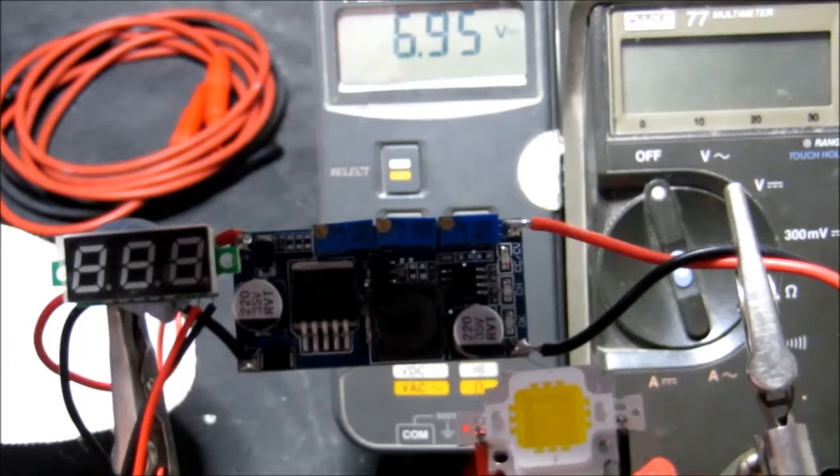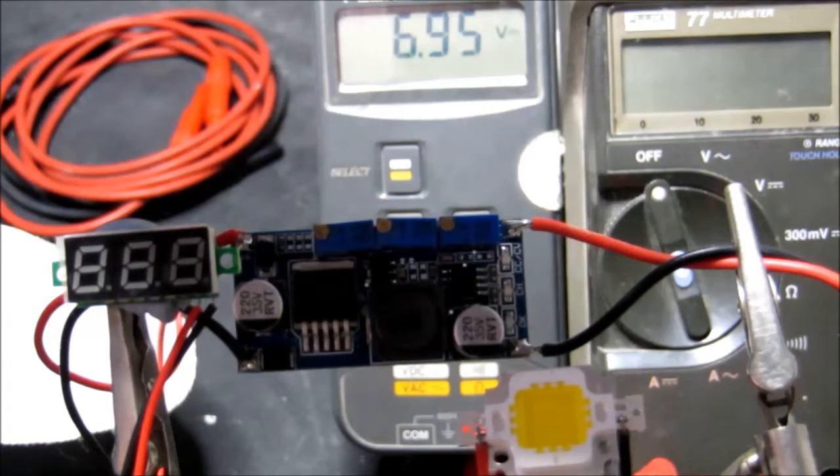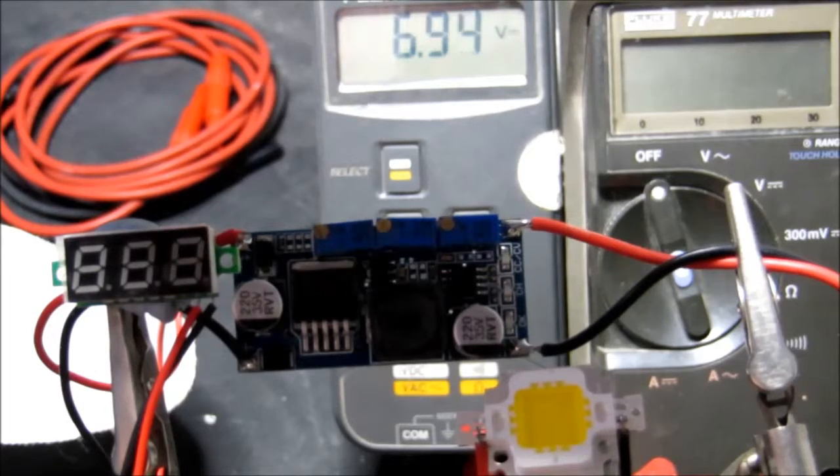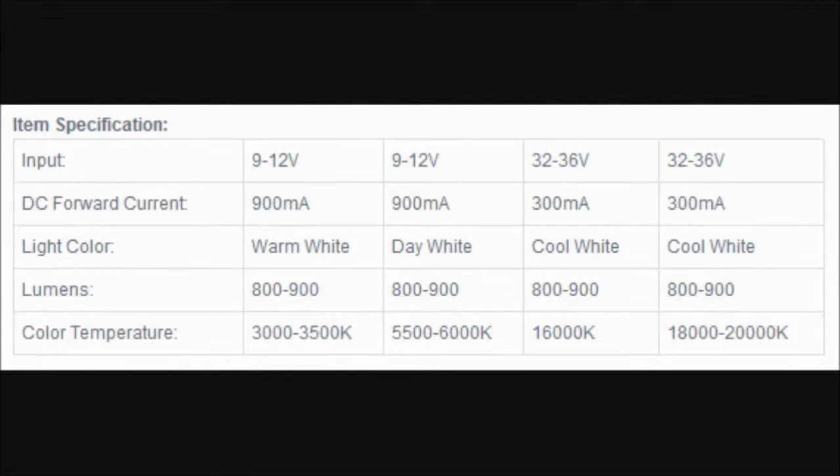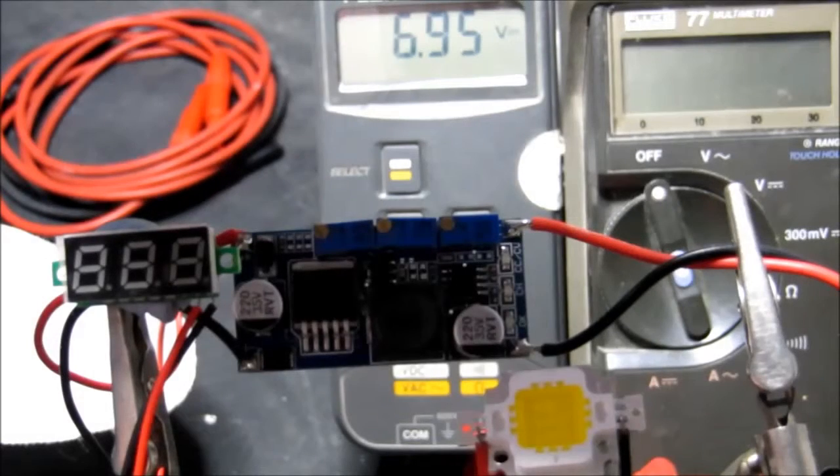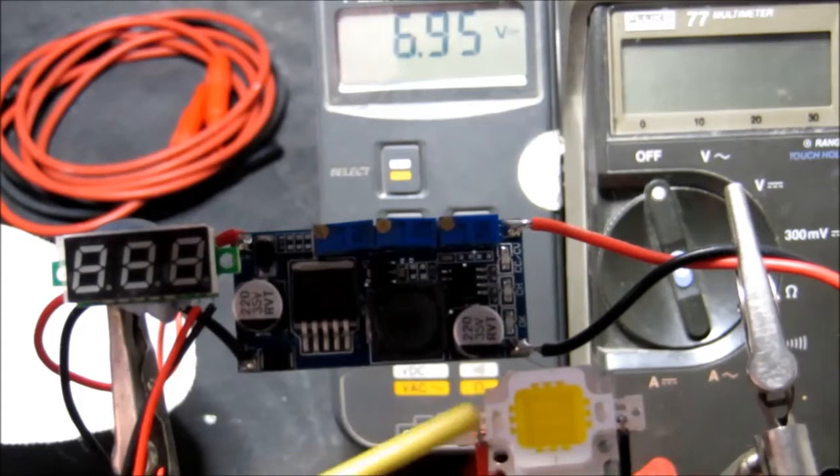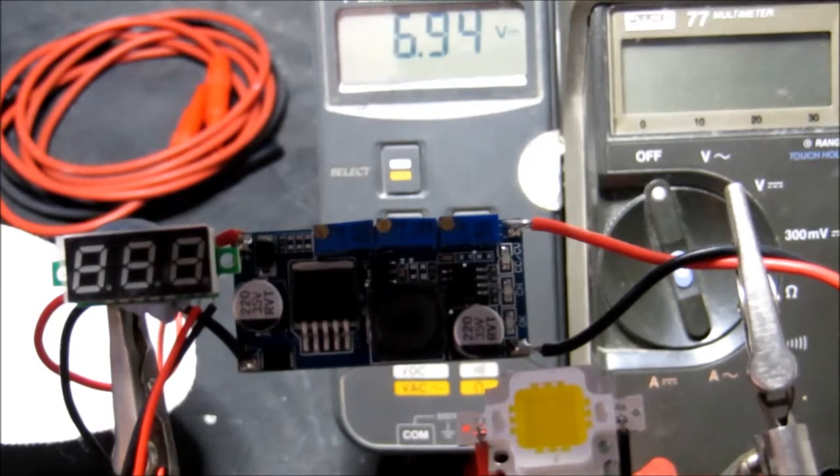This particular one is a warm white LED and it's the 9 to 12 volts version. You'll see on the web page that there are four different options that you can order. Firstly, the color - either standard white or the warm white, which I prefer for this particular application.